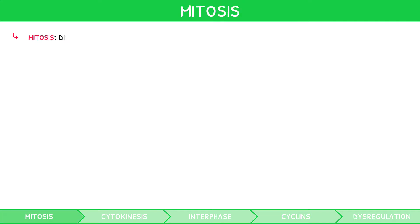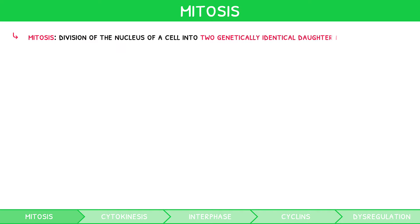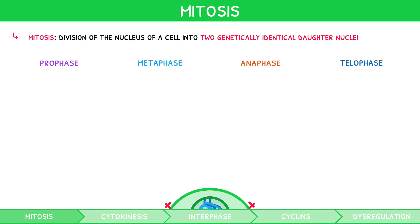Mitosis is the division of the nucleus of a cell into two genetically identical daughter nuclei. It involves four key substages which, in order, are known as prophase, metaphase, anaphase, and telophase. You need to be able to describe, in detail, the events that occur in each of these substages.